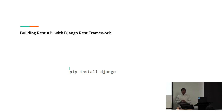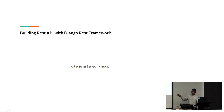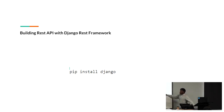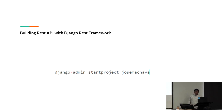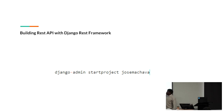We are going to use Django for building this application. Before you initialize your virtual environment, you have to install Django. After you have installed Django, what you have to do is start your project. This is the command you use in Django to start your project: django-admin startproject. I am creating a project called Jusema Shava, as you can see.